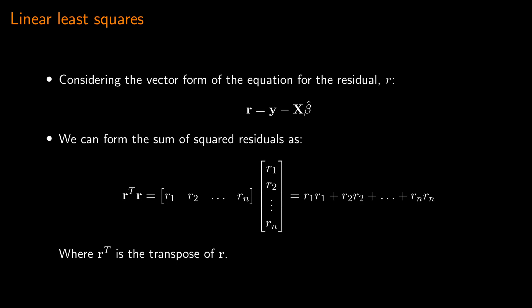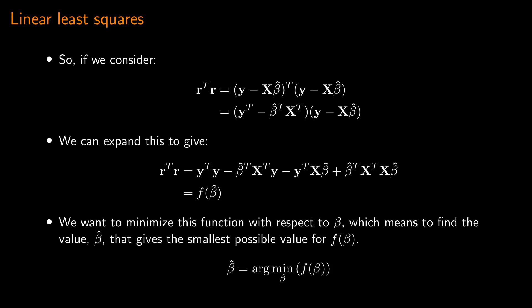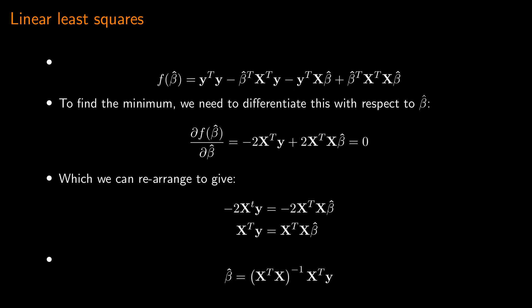If we consider the vector form of the residual equation, we get r equals y minus x·beta. We can form the sum of squared residuals by multiplying r-transpose by r. Substituting the equation for r into this gives r-transpose·r as a function of beta-hat, which we can rearrange and expand. Our aim is to minimize this function with respect to beta — to find the value beta-hat that gives the smallest possible value. To find the minimum, we differentiate with respect to beta-hat, set the result equal to zero, and then rearrange to give the result for beta-hat.